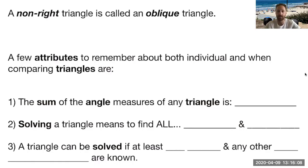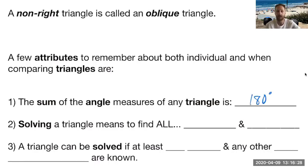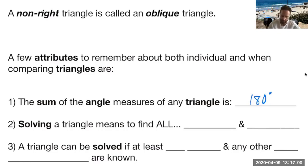A few attributes to talk about with triangles in general. We hopefully remember that the sum of all the angle measures of any triangle is 180 degrees. Now we're also going to be talking about how to solve a triangle. Usually we're solving equations to find the unknowns — in algebra it was typically an X variable. So to solve a triangle means the same thing: find all the unknowns. Any triangle is made up of three angles and also three sides, so to solve a triangle means to find all angles and sides.